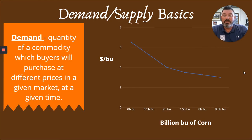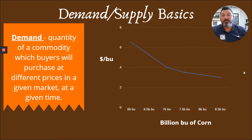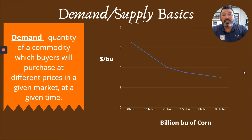If we look at demand and supply — demand is the quantity of a commodity which buyers will purchase at different prices in a given market at a given time. If we look at price of corn on the Y axis and billion bushels of corn in the marketplace on the X axis: if the price is up around $6 a bushel, we're probably in a short supply of corn and people are going to have to be very competitive to buy it. If the supply gets out around 8.5 billion bushels in a year's time, the price is probably going to come down significantly because there's so much there — because of oversupply we have to drop the price to get it sold, which is kind of where we sit right now with a lot of the corn price.